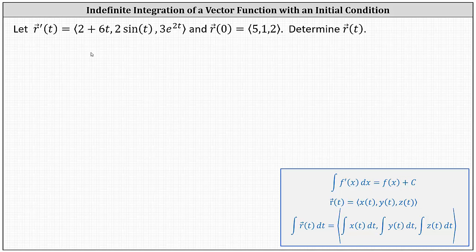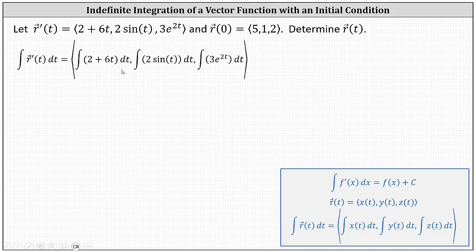Recall that integration and differentiation are inverse operations, which means by integrating r prime of t, we can recover the vector-valued function r of t. The integral of f prime of x with respect to x is equal to f of x plus c. By integrating f prime of x, we can recover the original function f of x, and we can use this idea to help us recover r of t. When integrating a vector-valued function, we integrate each component separately.